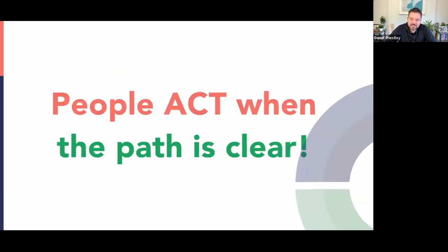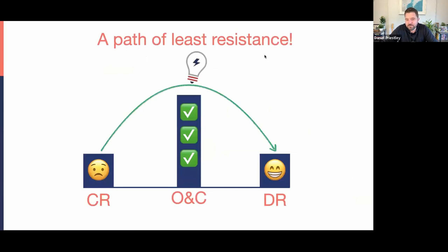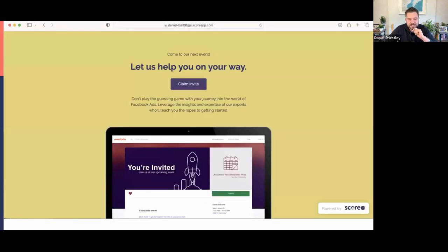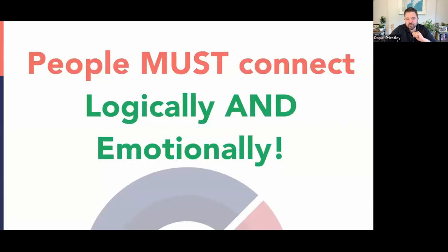People act when there is a clear pathway presented to them. What people buy is what they think of as the path of least resistance — the fastest way from where they are to where they want to be, without hitting their obstacles. They want something fast, affordable, and perfectly suited to their situation. The more data you collect, the more you can present what you do as a path of least resistance tailored to each person's situation.